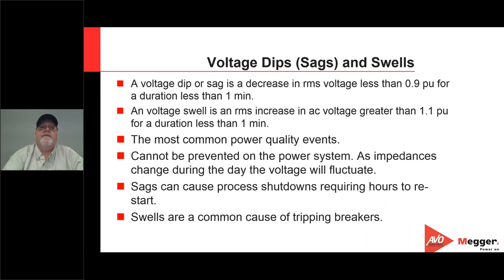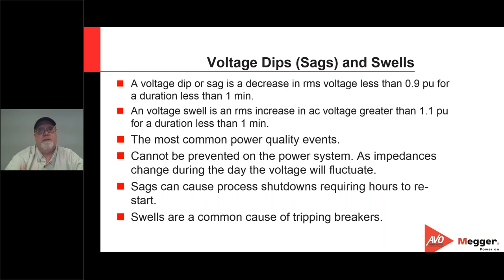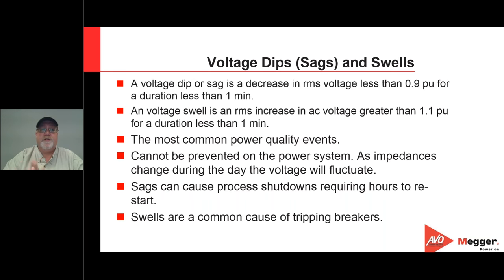We also have voltage dips, SAGs, and swells. You may hear the terms dip and SAG used interchangeably — in the United States we use the term SAG to represent a decrease in RMS voltage less than 0.9 per-unit, but for a duration of less than one minute. Outside the United States the term dip is typically used. Whenever you see dips or SAGs, they're talking about the exact same thing — it's just where you are in the world.